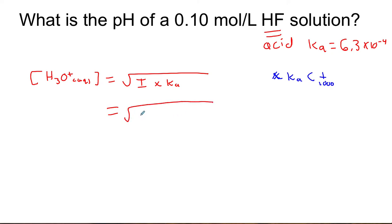So plugging in our values we have an initial concentration of 0.10 moles per liter, the Ka you have to look up, and this is so much faster than setting up an ICE table and then solving it. You'll always end up with the same format. Our concentration of hydronium is going to be 0.00794 moles per liter.